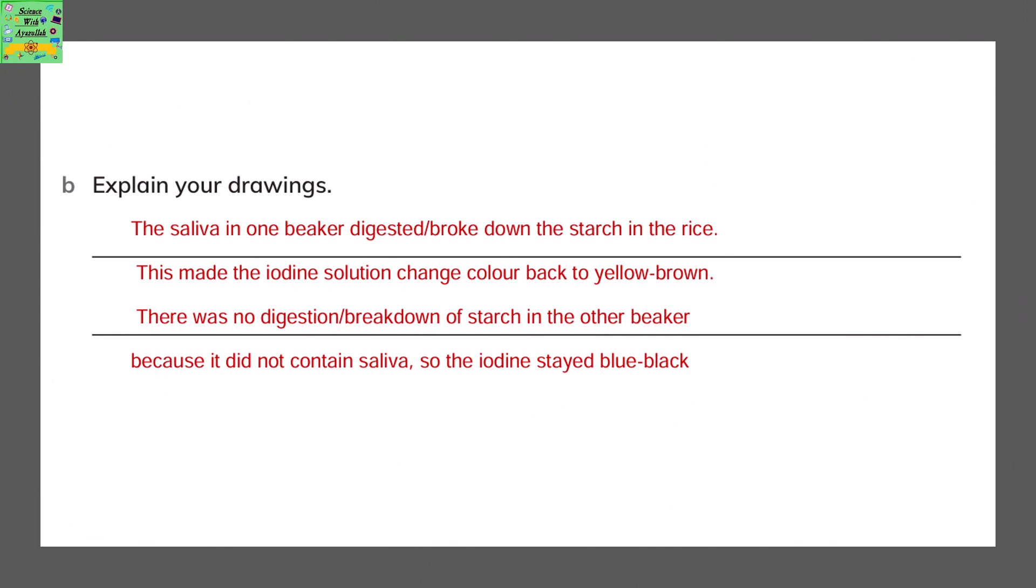The saliva in one beaker digested or broke down the starch in the rice. This made the iodine solution change color back to yellow-brown because of the digestion of starch. There was no digestion or breakdown of starch in the other beaker that had water, so the iodine stayed blue-black.